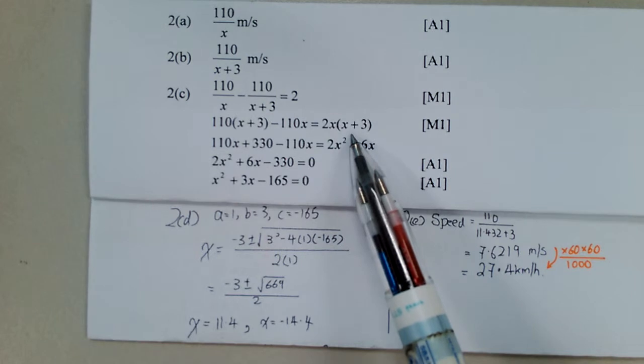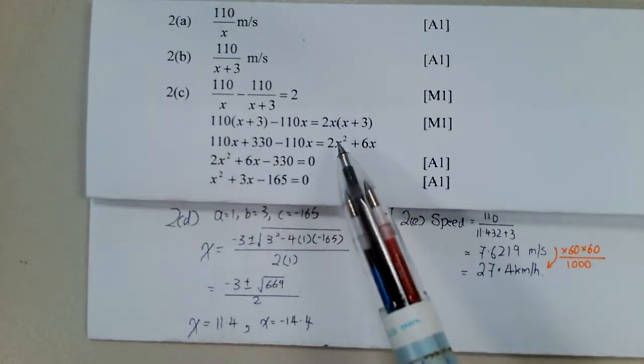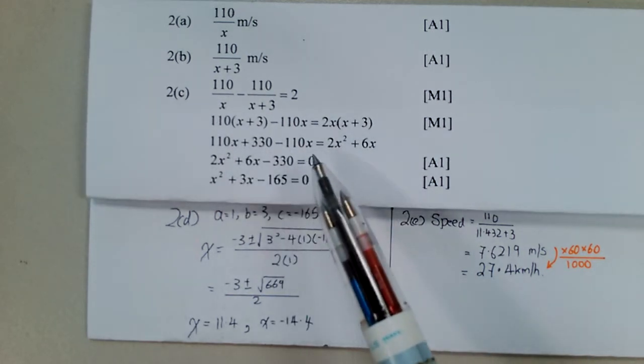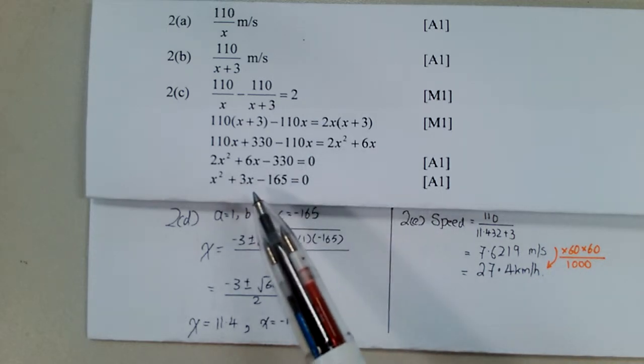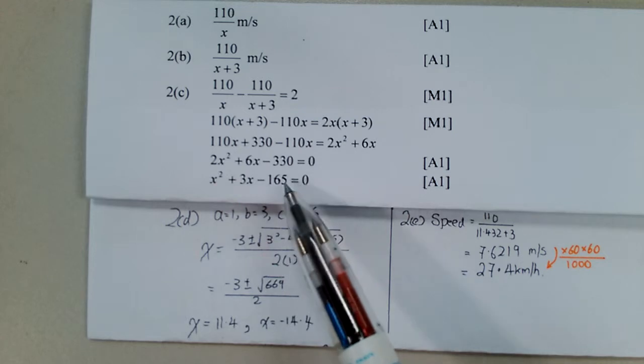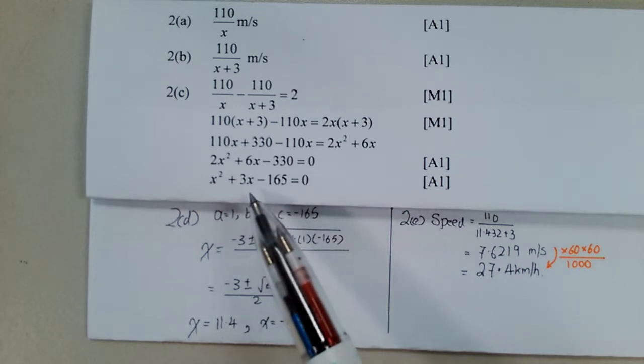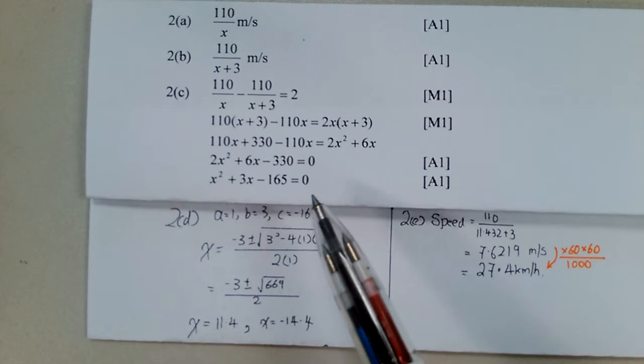So I have x, x plus 3 here. You get this, which I shall not explain. Then you expand, you collect terms on the left-hand side. You divide by 2. You should be able to prove that x squared plus 3x minus 165 is equal to 0.